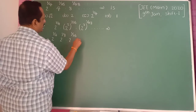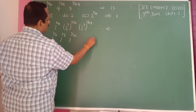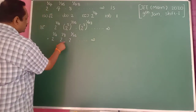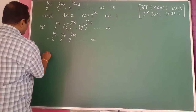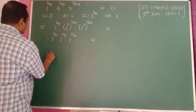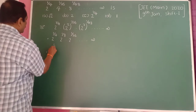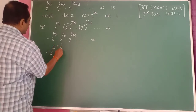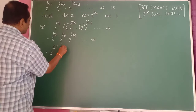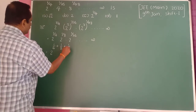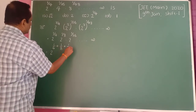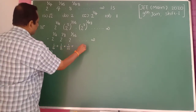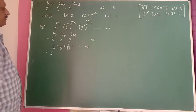So we get 1/16 and so on up to infinity. Since bases are the same, we can write 2 raised to the power of 1/4 plus 1/8 plus 1/16 plus dash dash up to infinity.